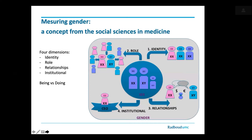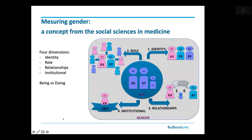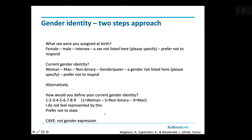Moving on to gender — this will be a bit shorter. I already explained the concepts of identity, role, and relationships. Just a few examples of how to ask about gender identity: usually in questionnaires we have one question asking 'what gender are you' or 'what sex are you', and different European languages have different ways of translating these concepts. Ideally, what is supported as most informative in surveys is to ask two questions: 'what sex were you assigned at birth?' and 'what is your current gender identity?'